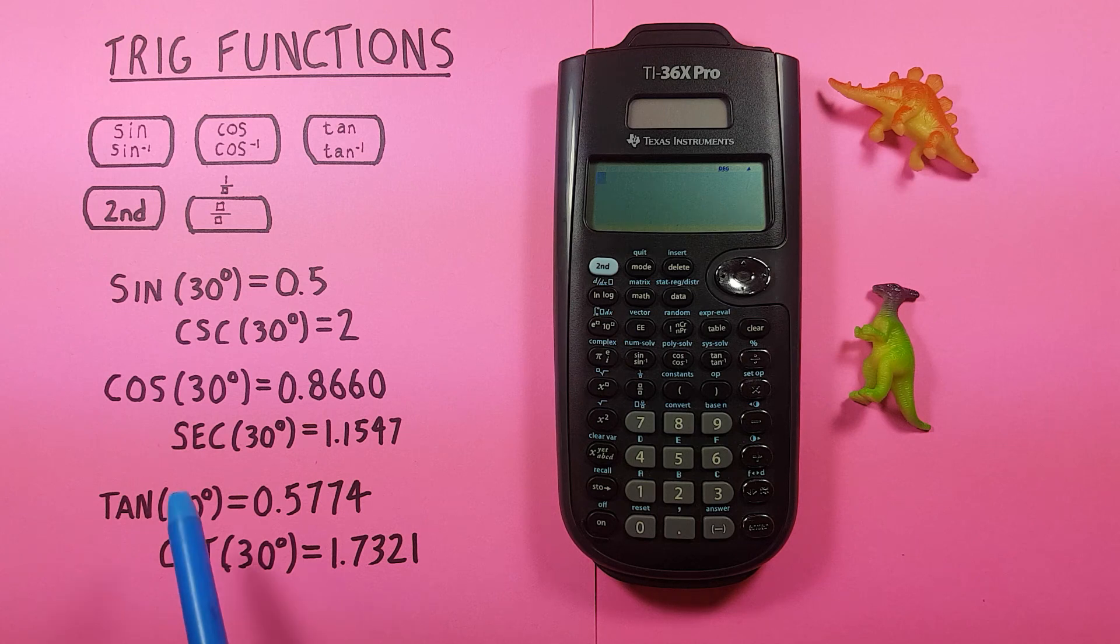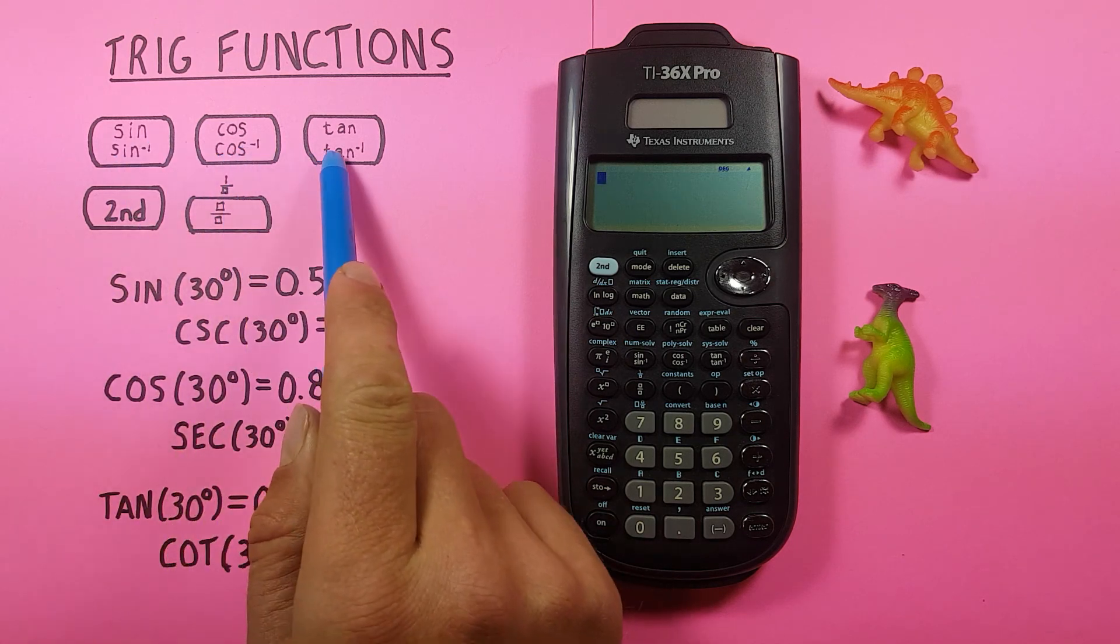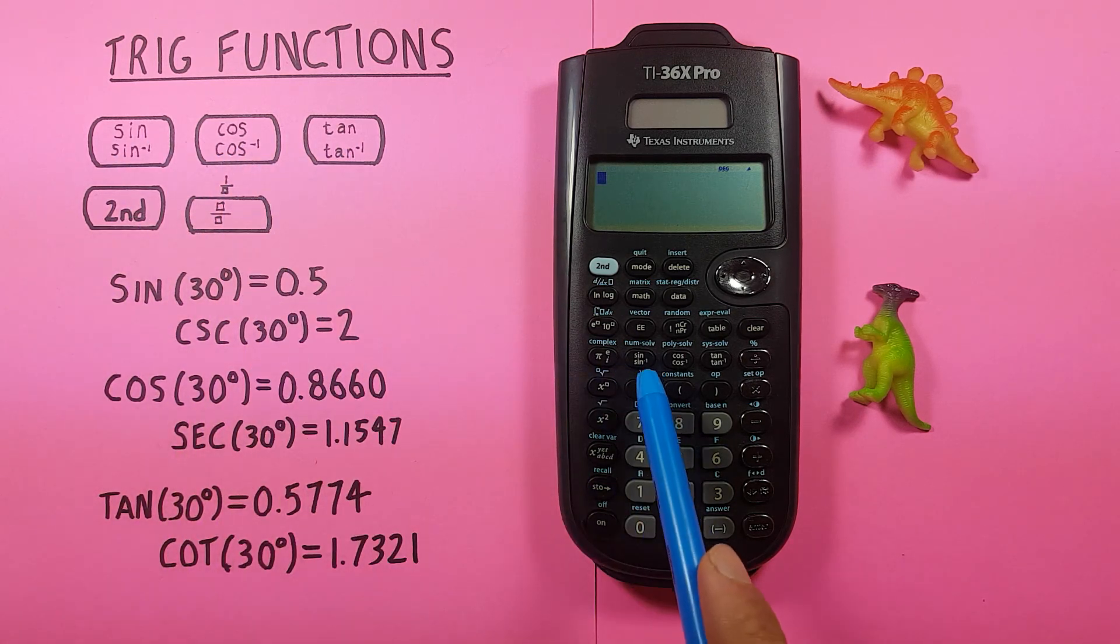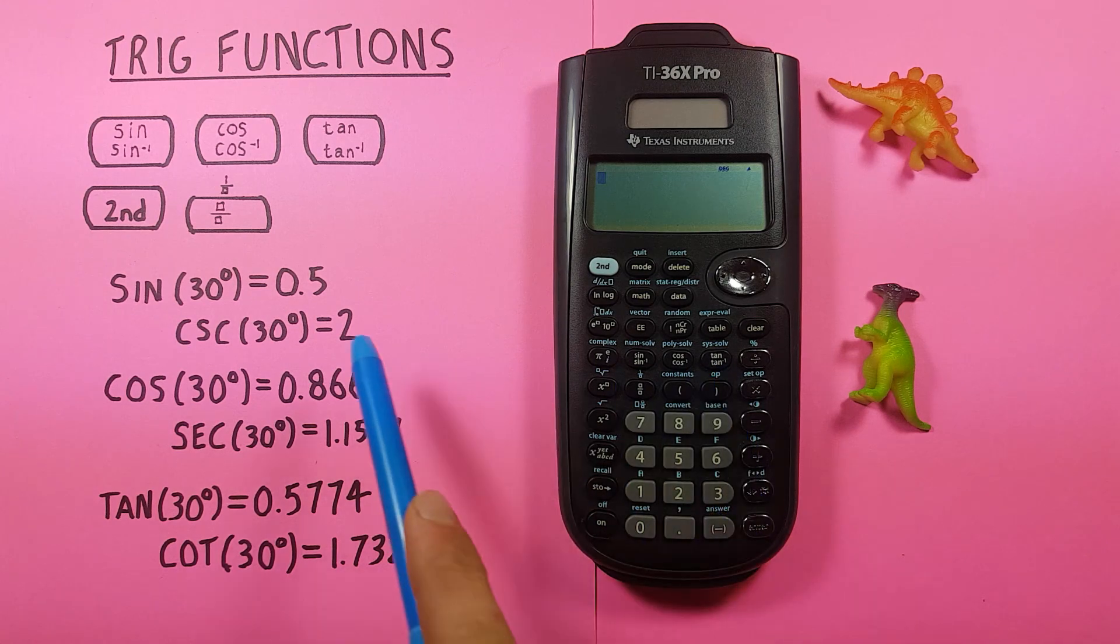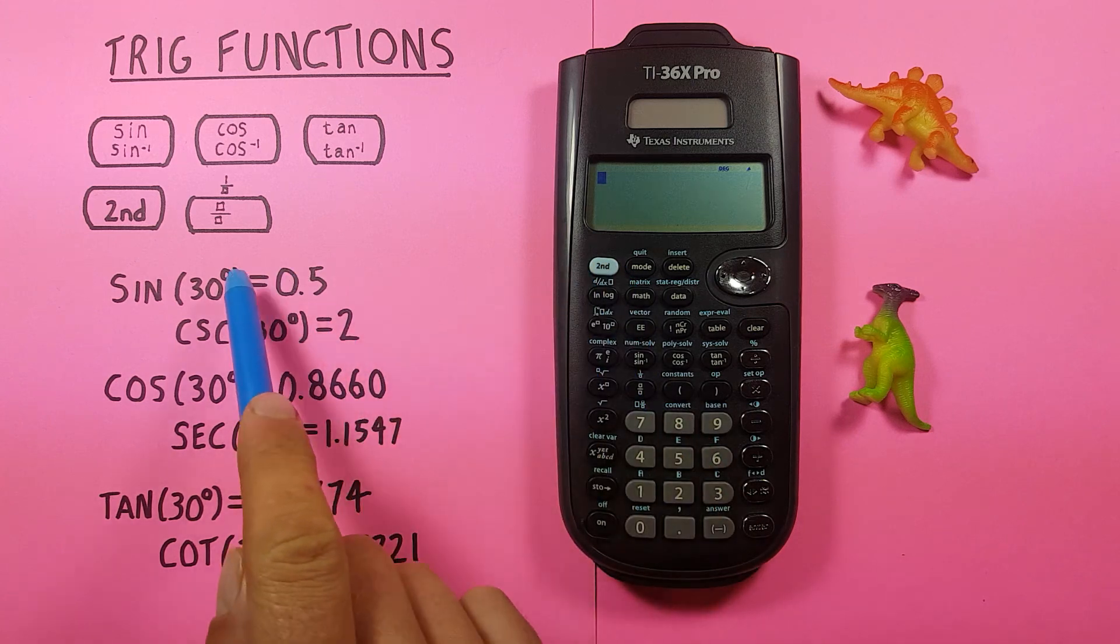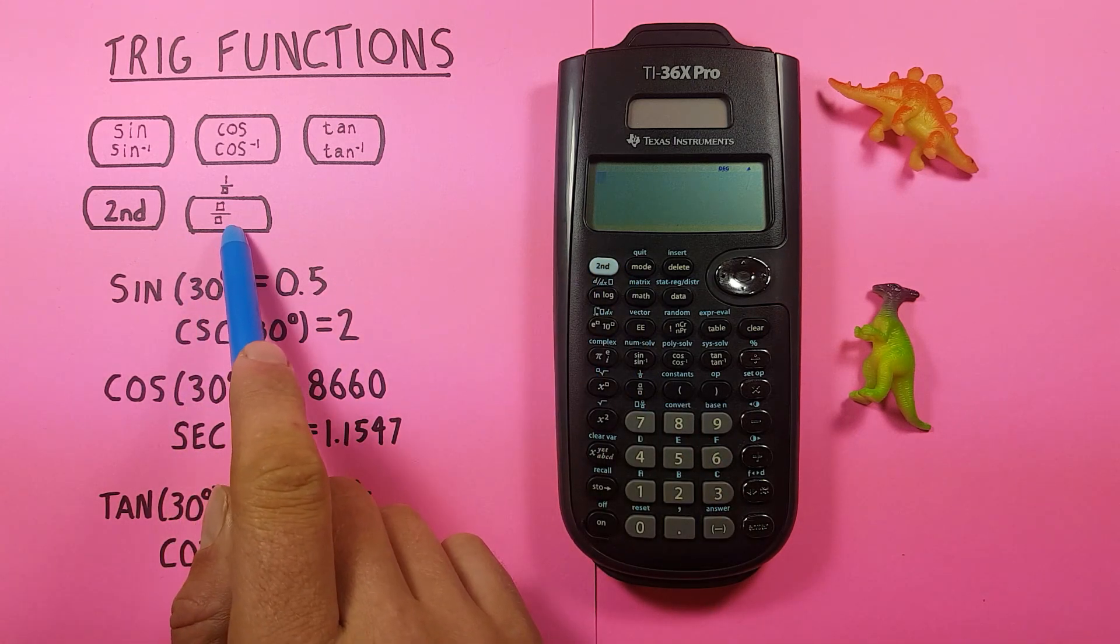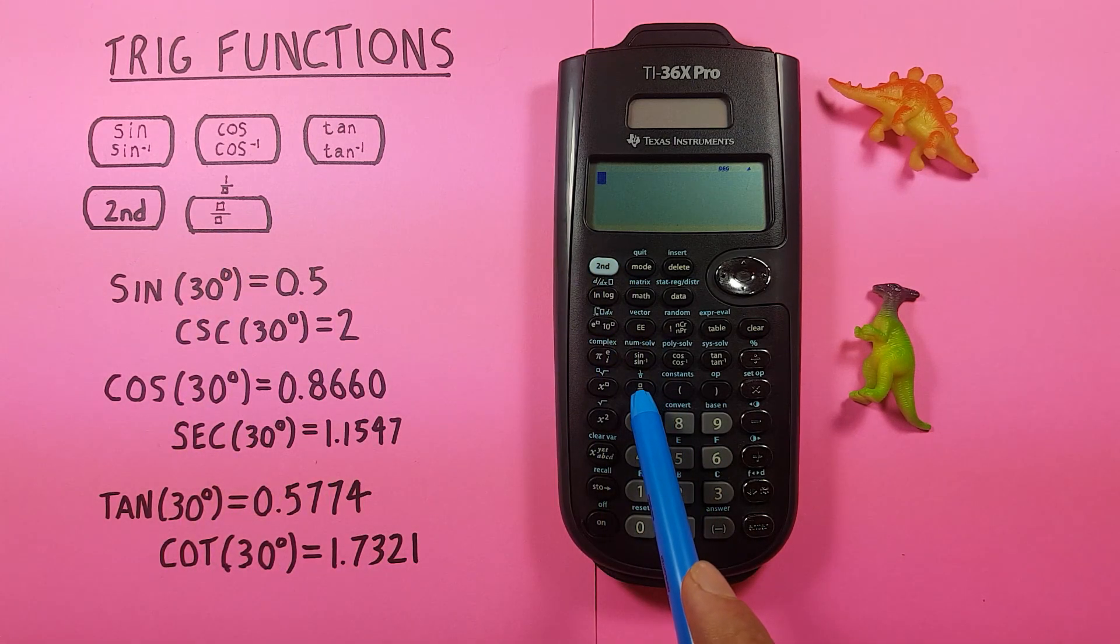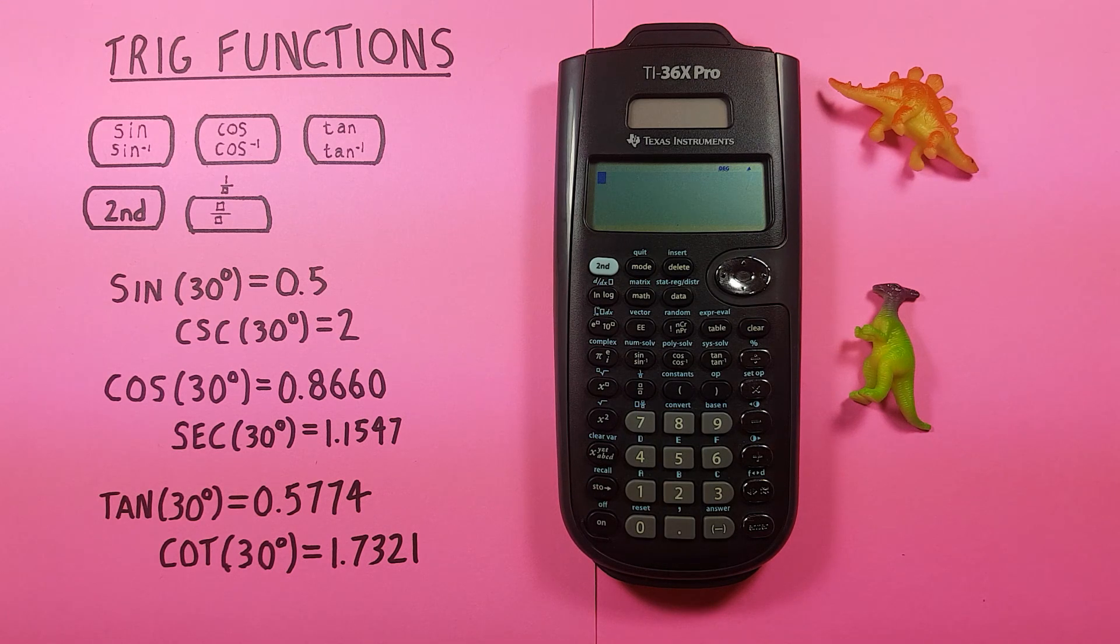To do this we'll be using the sine, cosine, and tan keys that are located along here, as well as the second function key located here on the top left, and the inverse button located here. The examples we'll be doing here will all be using degrees.